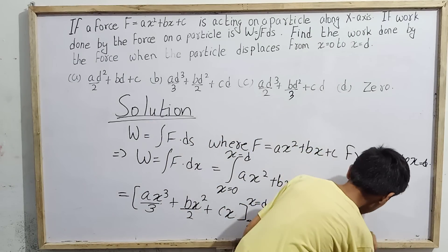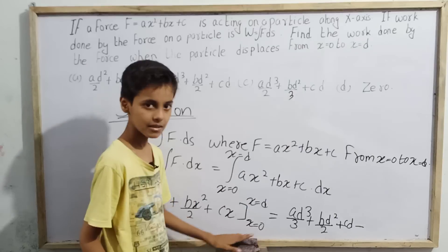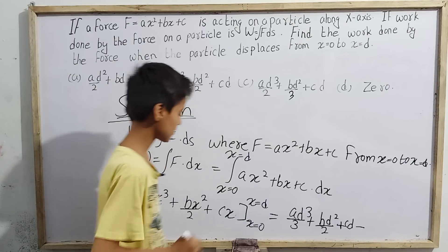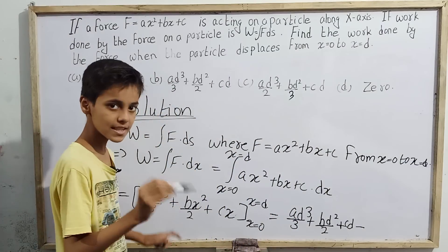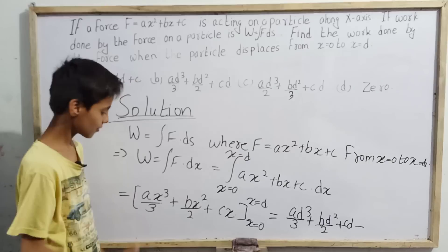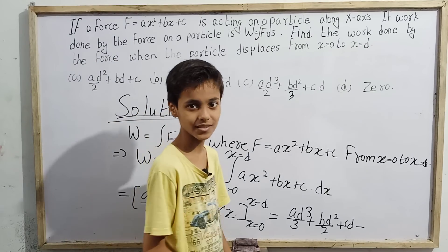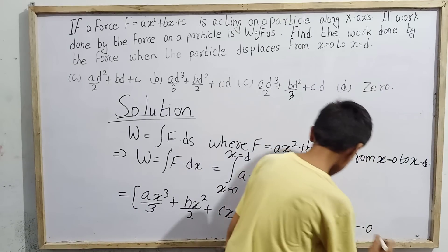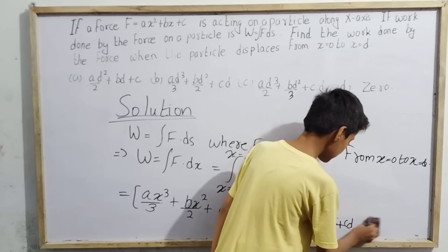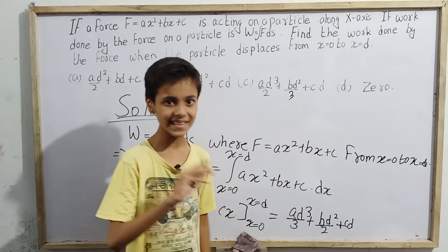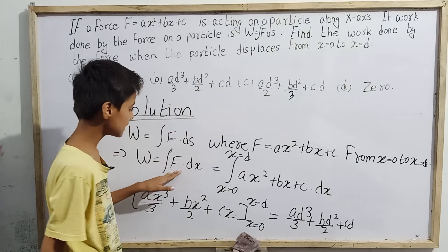Then we subtract the lower limit value by putting x equals 0: zero cubed is zero, zero squared is zero, and c times zero is zero — so the lower limit gives zero. Subtracting zero means the result is unchanged.